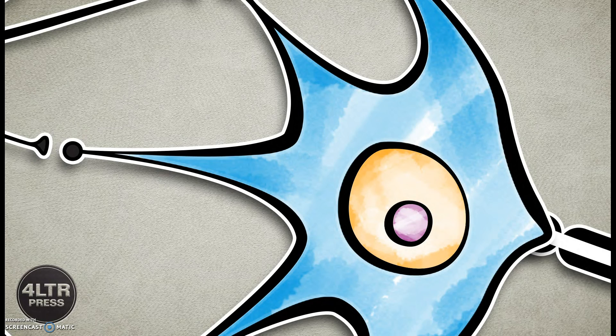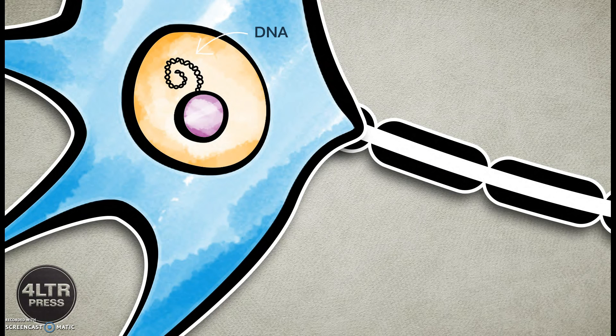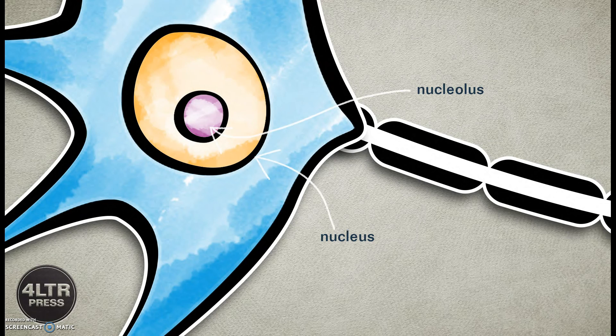The nucleus contains the cell's DNA. The genes of the DNA determine and control the functions of the neuron. Within the nucleus is another structure called the nucleolus, which transcribes the information contained in the genes into RNA, which in turn makes the substances necessary for the neuron to live and function.